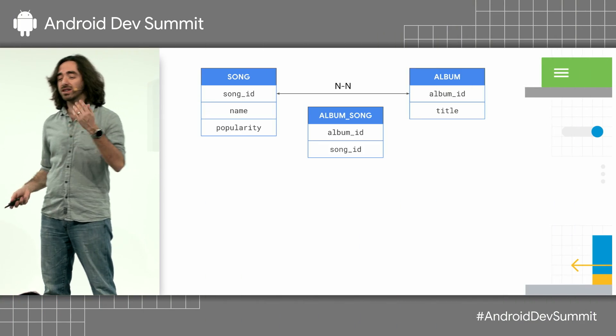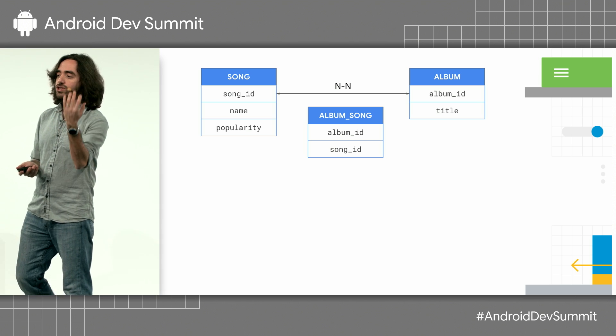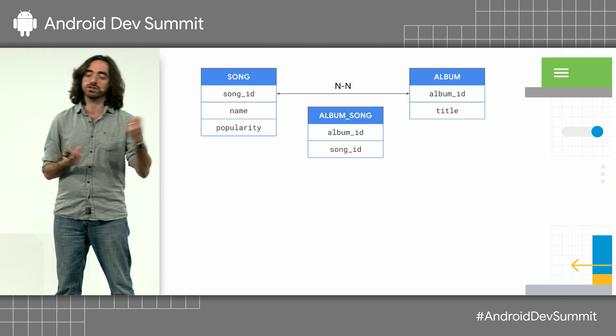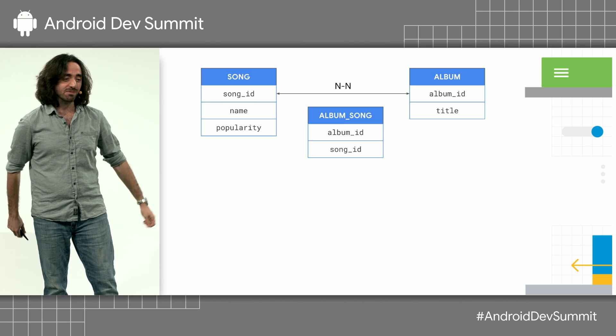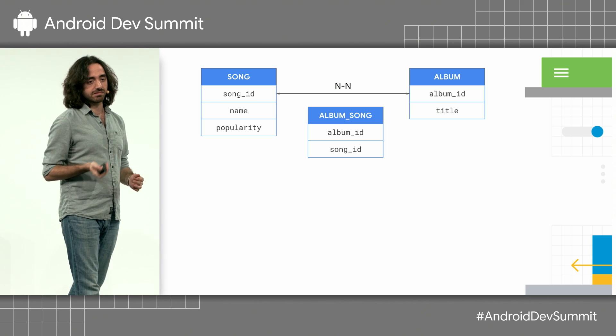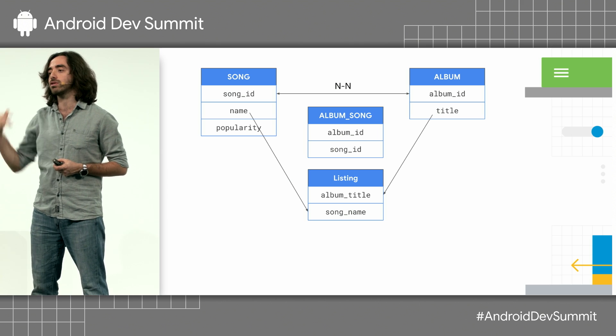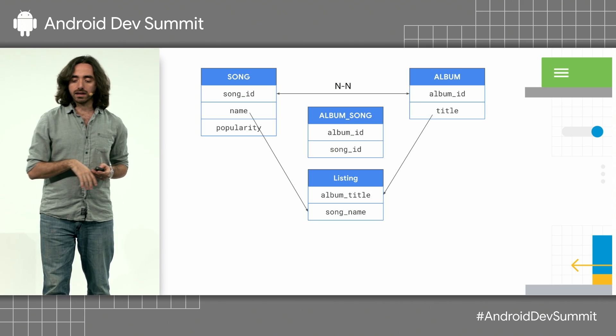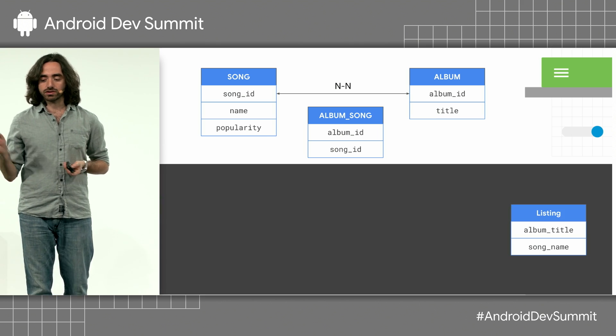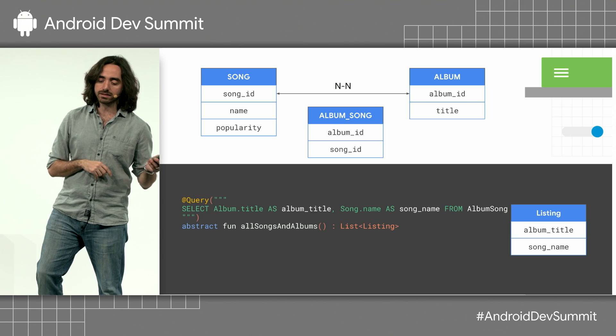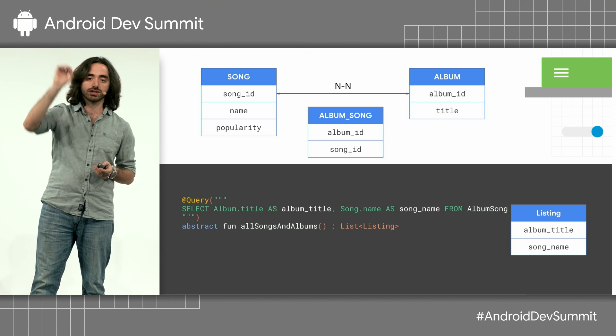Another important feature we added is support for database views. Going back to our song and album example: we have songs and they have albums, and a song might be in multiple albums, so we have a junction table that associates songs with albums. Let's say you want to fetch a listing with the album name and all the songs in it — you have a listing class and you write a query fetching from that junction table.